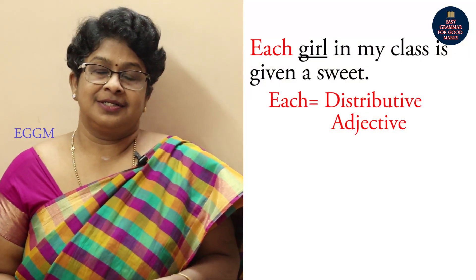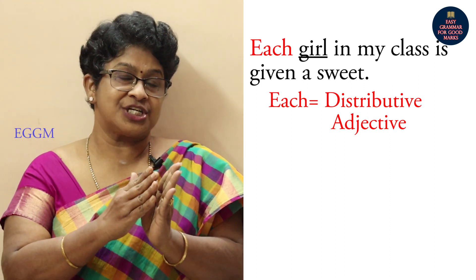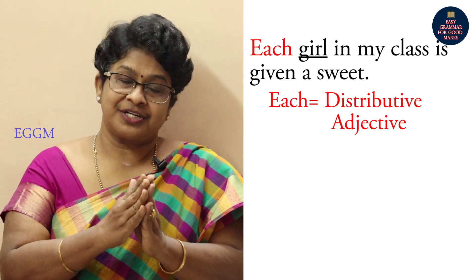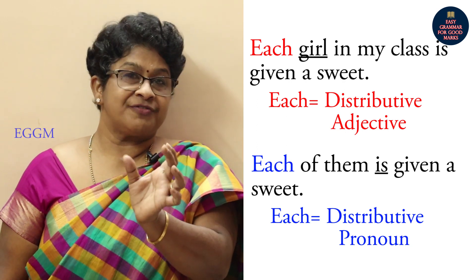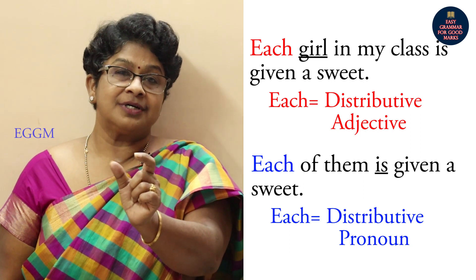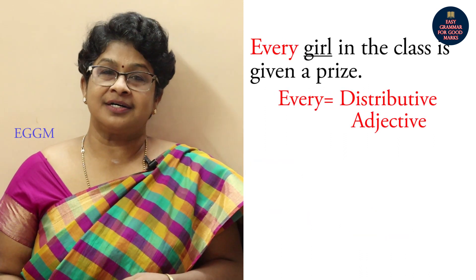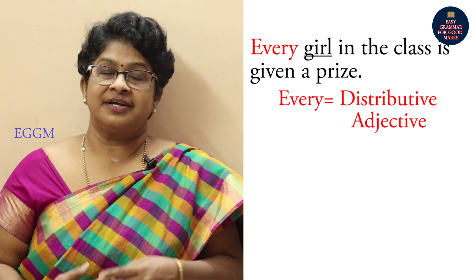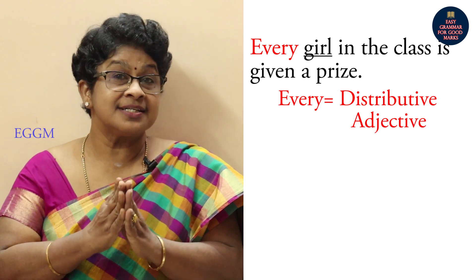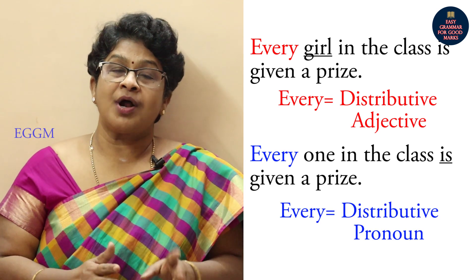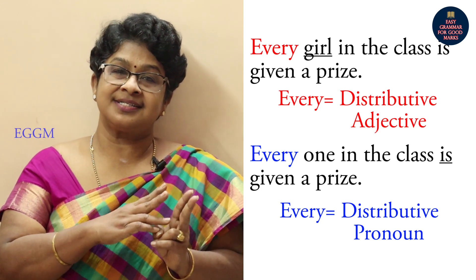For example: 'Each girl in my class is given a sweet' — here 'each' comes before the noun, so it is an adjective. 'Each of them is given a sweet' — here 'each' comes before a verb, so it is a pronoun. Similarly, 'Every girl in the class is given a prize' is an adjective use, while 'Everyone in the class is given a prize' is a pronoun use.